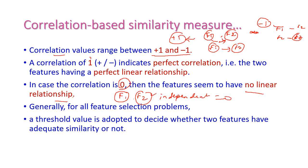In all feature selection problems, a threshold value is adopted. This threshold value is used to decide whether two features have adequate similarity or not. In our problem, if the value is 0, then there should not be any relation between those two features F1 and F2.